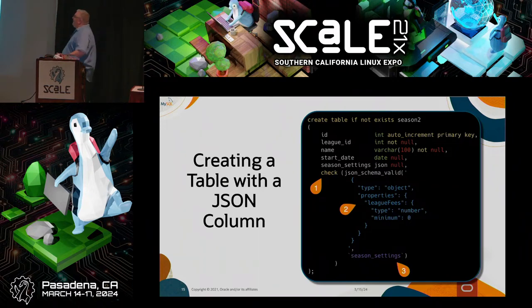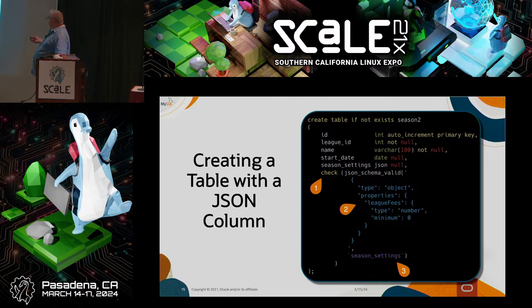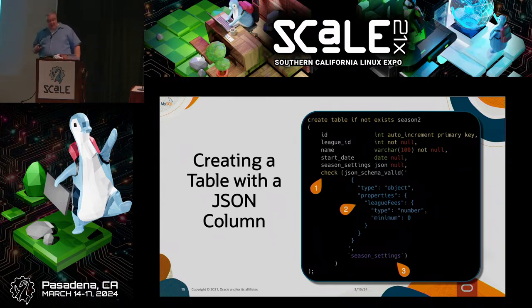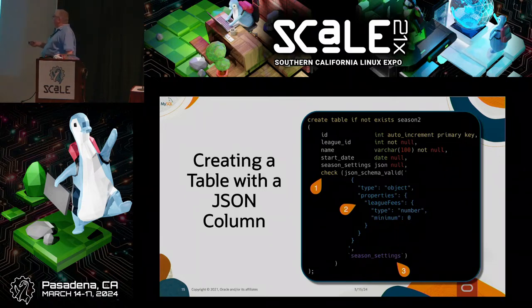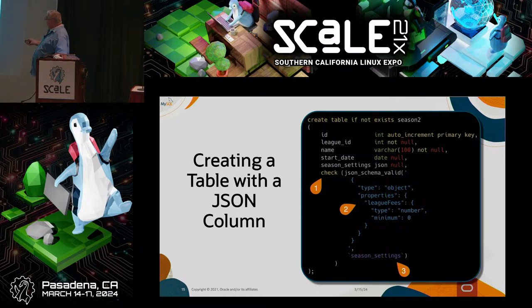Creating a table with a JSON data type is very easy — in your column definitions, you specify the data type as JSON. We have a column called season_settings with a JSON data type. But we also want to ensure the league_fees property is no less than zero. So we add a CHECK constraint calling the JSON_SCHEMA_VALID function, passing a configuration where we say the root needs to be an object with a property named league_fees that is a number with a minimum value of zero.